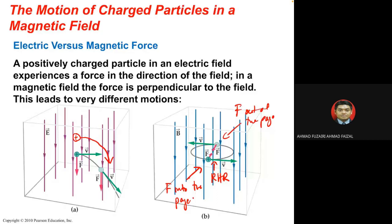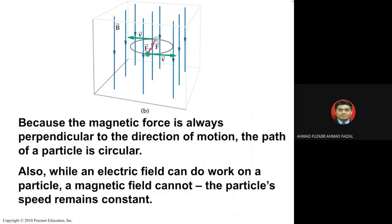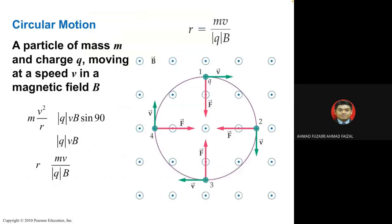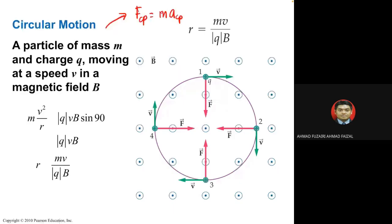When a positive charge moves in a magnetic field, it undergoes circular — or helical — motion. Because of circular motion, we can involve F_cp (centripetal force) which equals m times a_cp. Centripetal acceleration is due to the force acting toward the center of rotation.